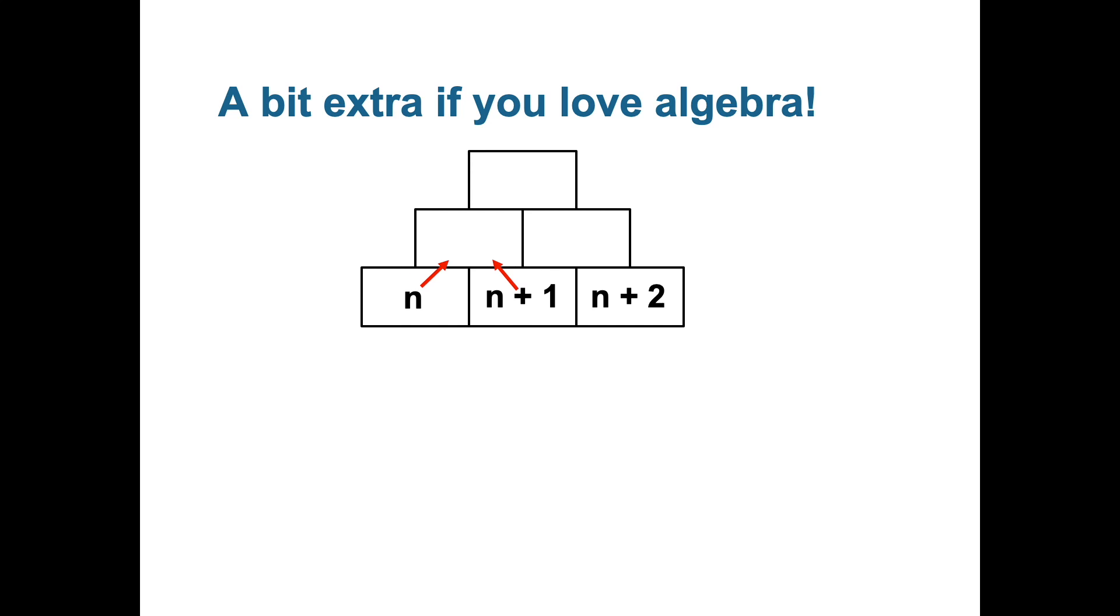So as with all the other ones with numbers, you add the two boxes together to get the one above it. So n plus n plus one would give us two n plus one in the box there. So there's a quick example on how to go about filling in this particular number pyramid.